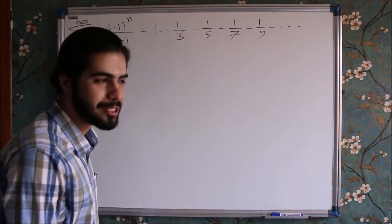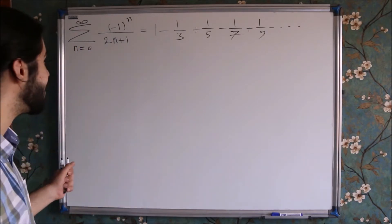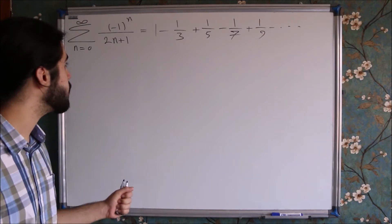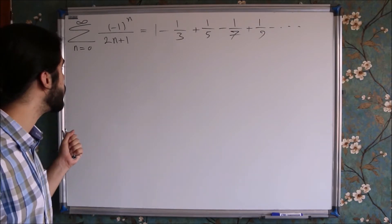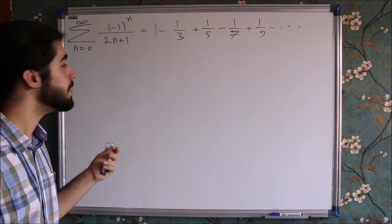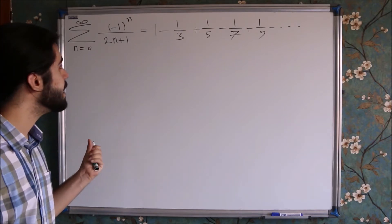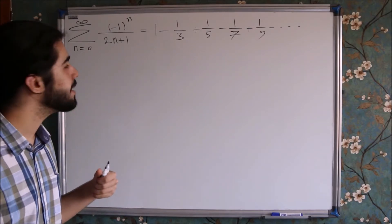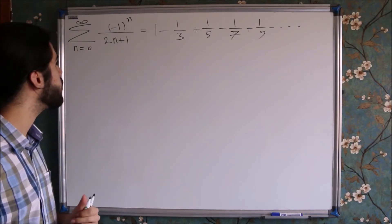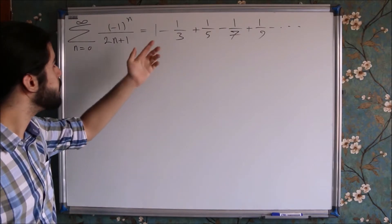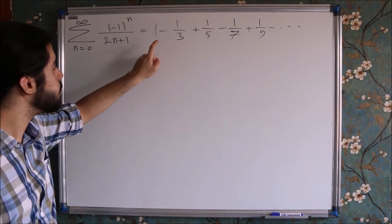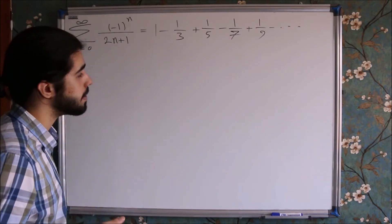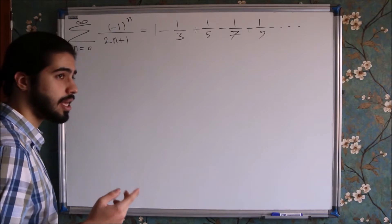What's up guys, welcome back to my YouTube channel. Here is another infinite series that I'm going to show you guys how to evaluate. For those who don't know the name of this series, they are alternating series, because the sign changes alternatively. I wrote down its first few terms for you guys, which is 1 minus 1 over 3 plus 1 over 5 minus 1 over 7 plus 1 over 9 minus, and it goes on.